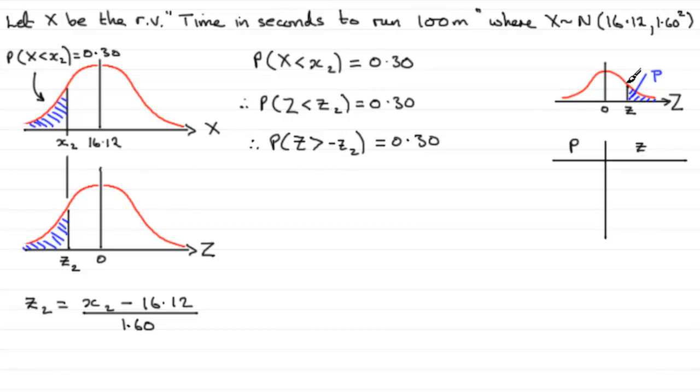So, all we've got to do then is look in the tables, the inverse normal tables, look for a P value of being 0.30.